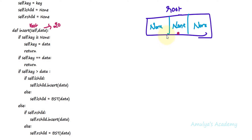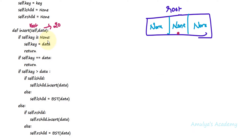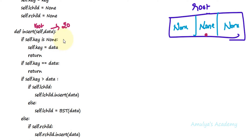If a node's key is None then I'll treat that node as not present — the node is empty. I won't consider that node. So even though we have a root object, I'm considering this tree as None because its key is None. That's why the condition self.key is None becomes true. So I'll set self.key equal to data — root.key equals data — and here I'll store 20. Now a node is created with key as 20, left child as None, right child as None. Now our tree contains one node.